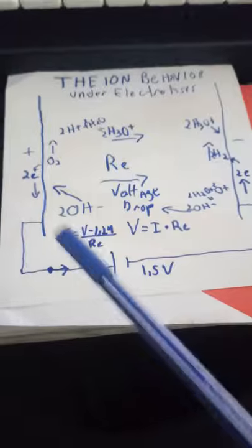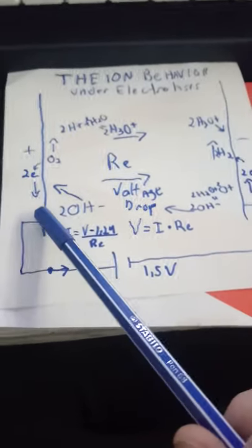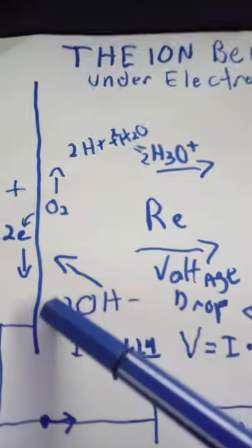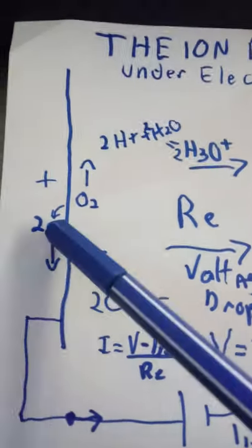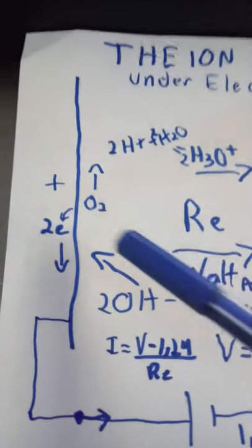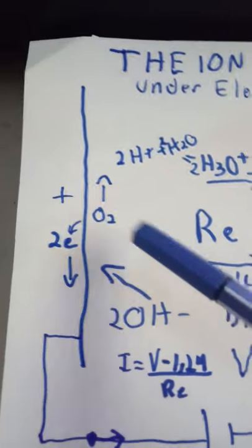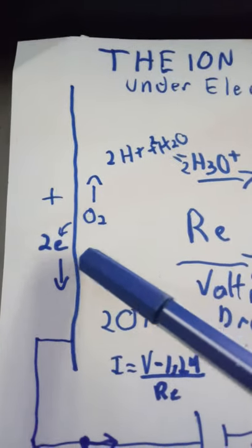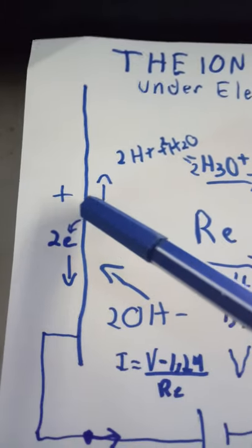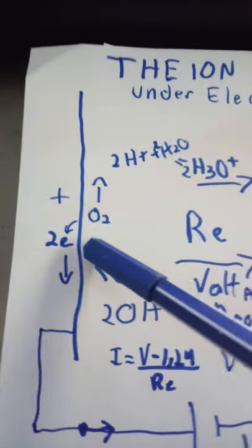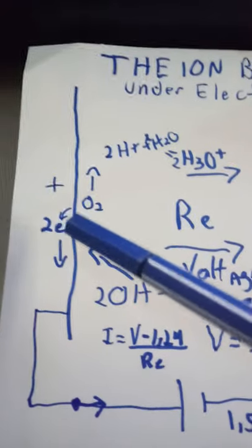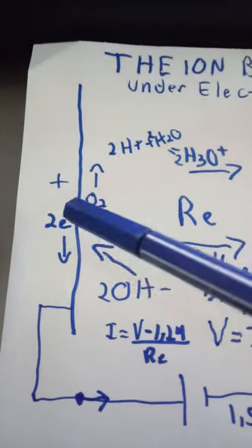It's important to understand this because here you can see what is happening on each electrode. At this electrode, negative ions are getting adsorbed into the electrode surface. When the ion gets adsorbed, the electrons become available to the circuit.